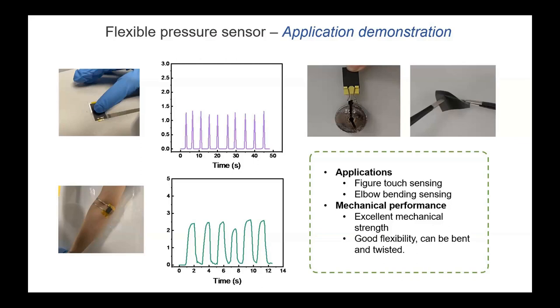The as-prepared GC film shows excellent mechanical strength, because with a size of 0.8 times 2 centimeters, it can hang up a 100 gram weight with no obvious deformation or cracking. The device also shows good flexibility because it can be twisted and bent.